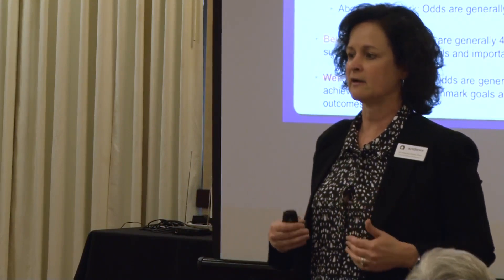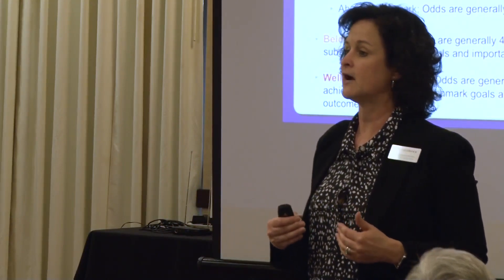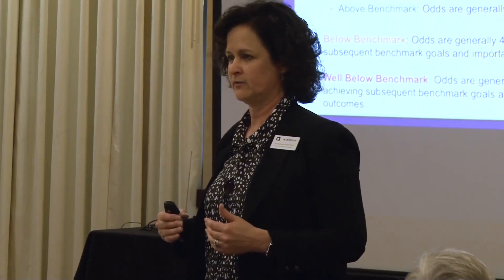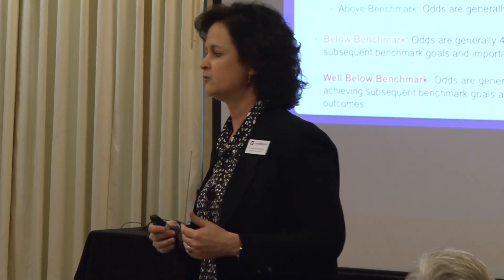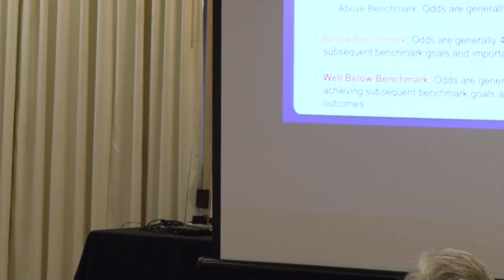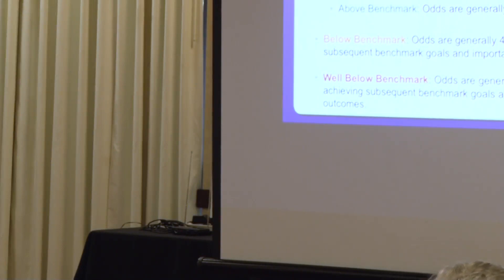Those three score categories are defined by odds of future reading health. A student who scores at or above benchmark, overall in general, has an 80 to 90% chance of being a reader at the end of first grade. That's what it means to score at or above benchmark.